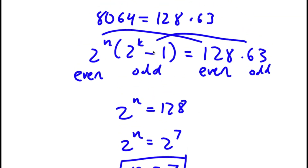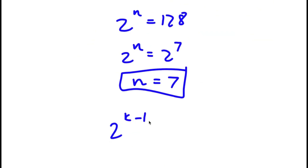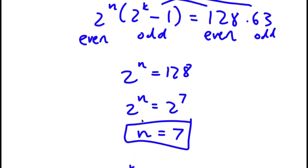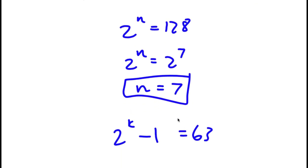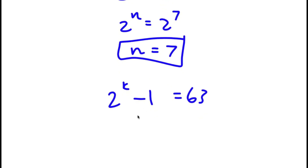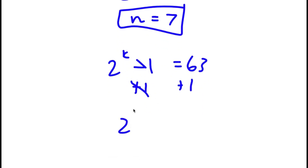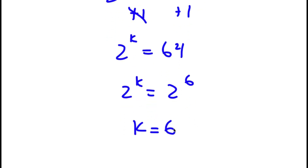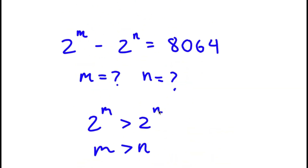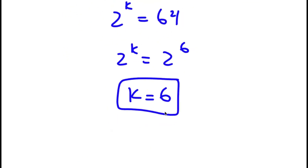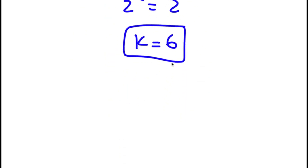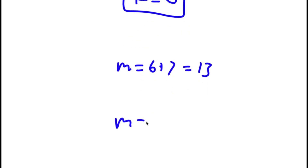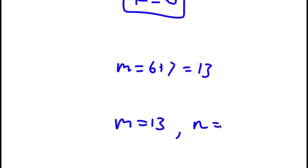Now, we have 2 to the power of k minus 1 equals 63. Adding 1 to both sides gives 2 to the power of k equals 64. Since 64 is the same as 2 to the power of 6, k is equal to 6. Remember, m equals n plus k, so m equals 7 plus 6, which is 13. So m is equal to 13 and n is equal to 7. These are my solutions.